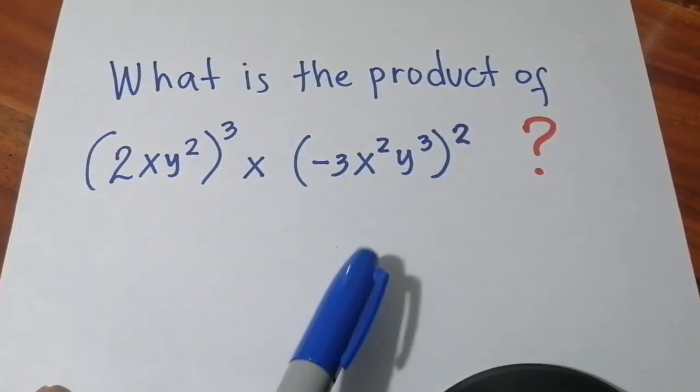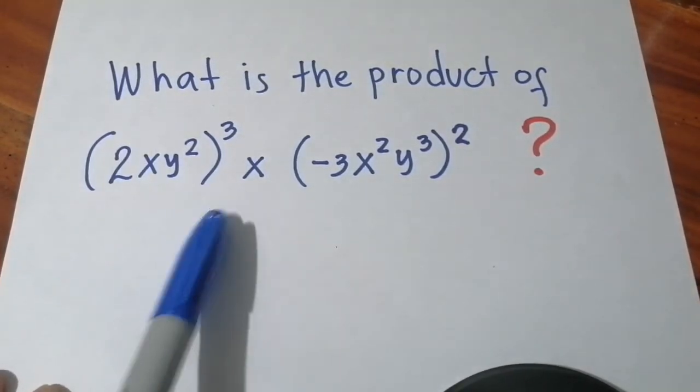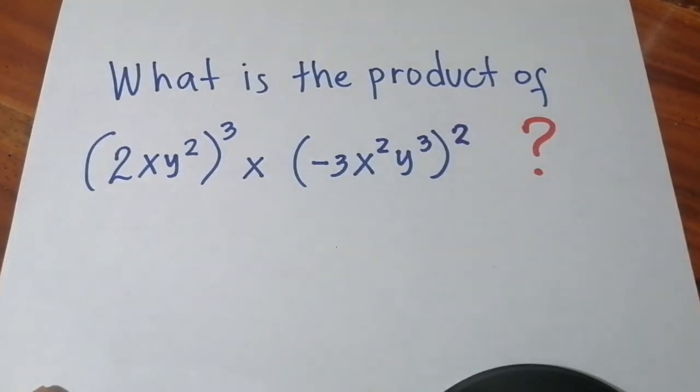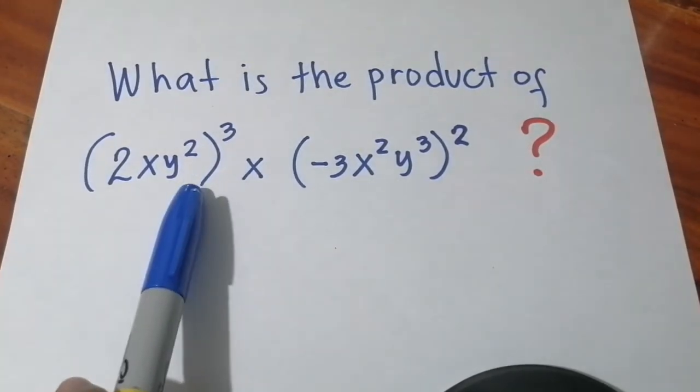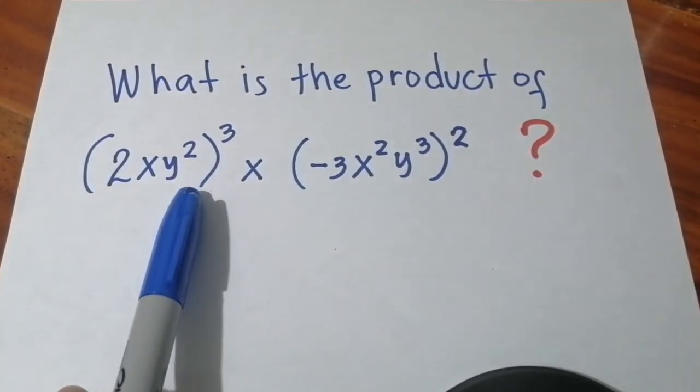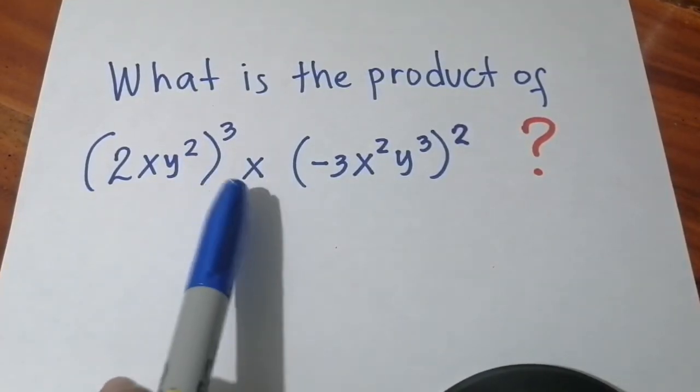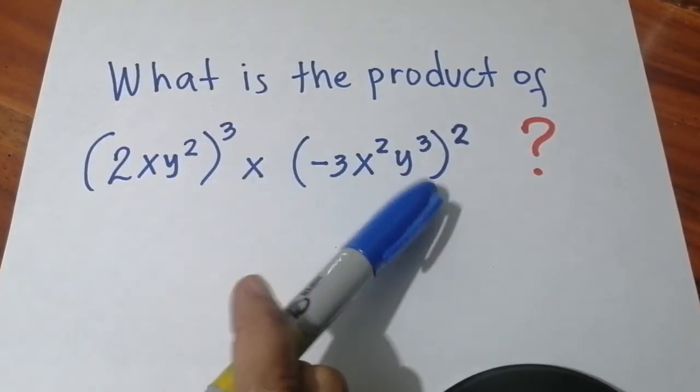So to solve this equation, what is the product of 2xy squared raised to the third power and negative 3x squared y cubed raised to the second power? The first thing you need to do when you have this kind of equation is simplify the exponent. We have to simplify the exponent first because we have a double exponent here.